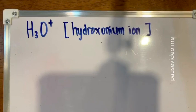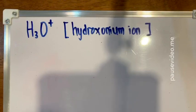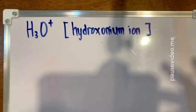Let me use an example to explain how the formation of a dative bond happens in the hydronium ion. The hydronium ion is an ion formed between one water molecule and one hydrogen ion. Before we start looking at the formation of the hydronium ion, let us draw out the Lewis structure of the water molecule.